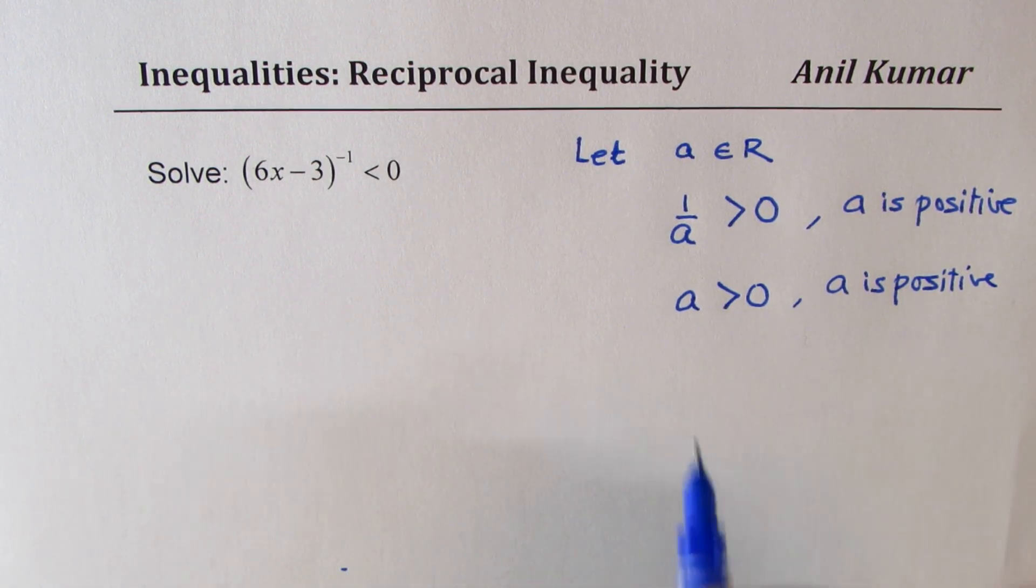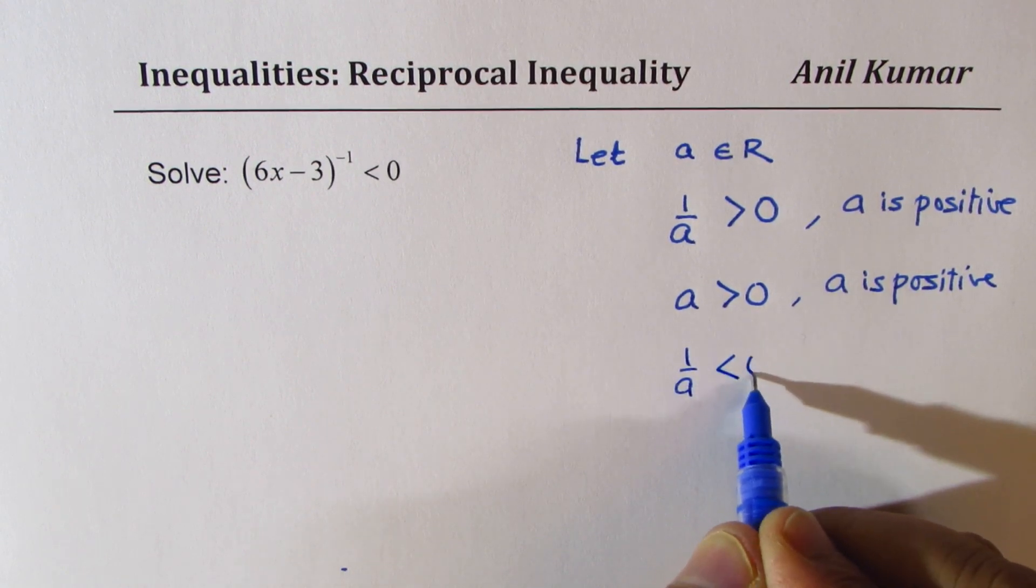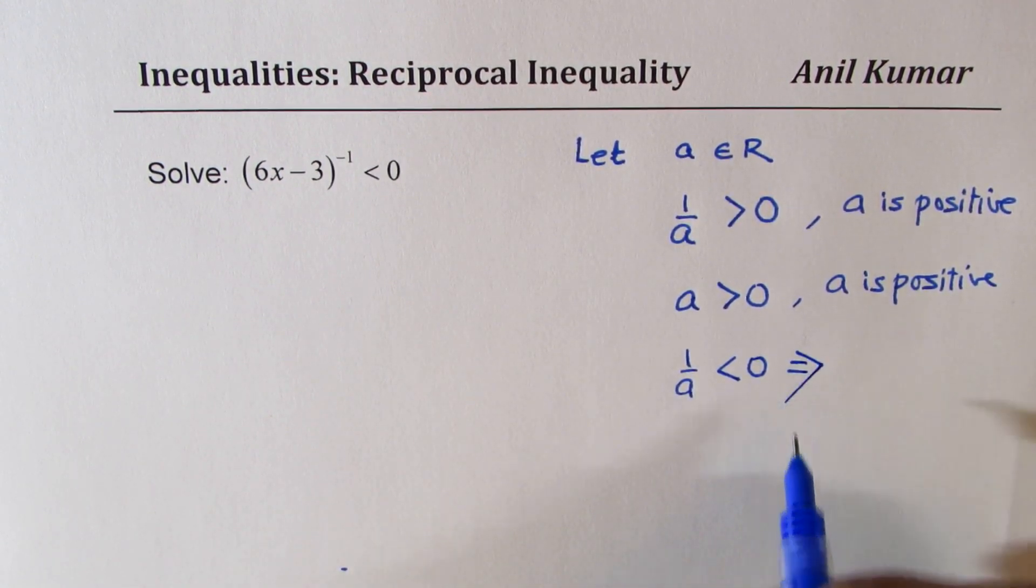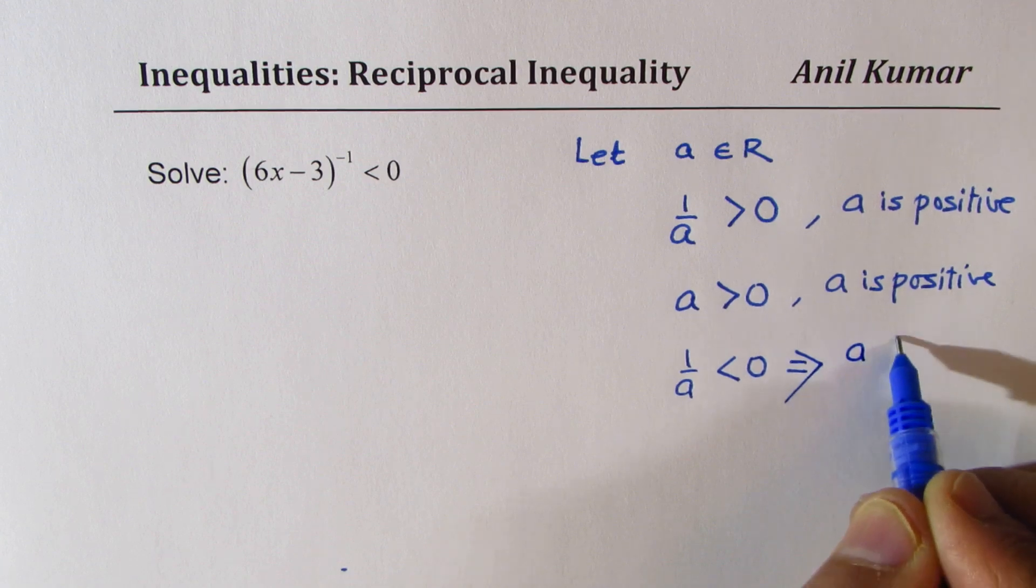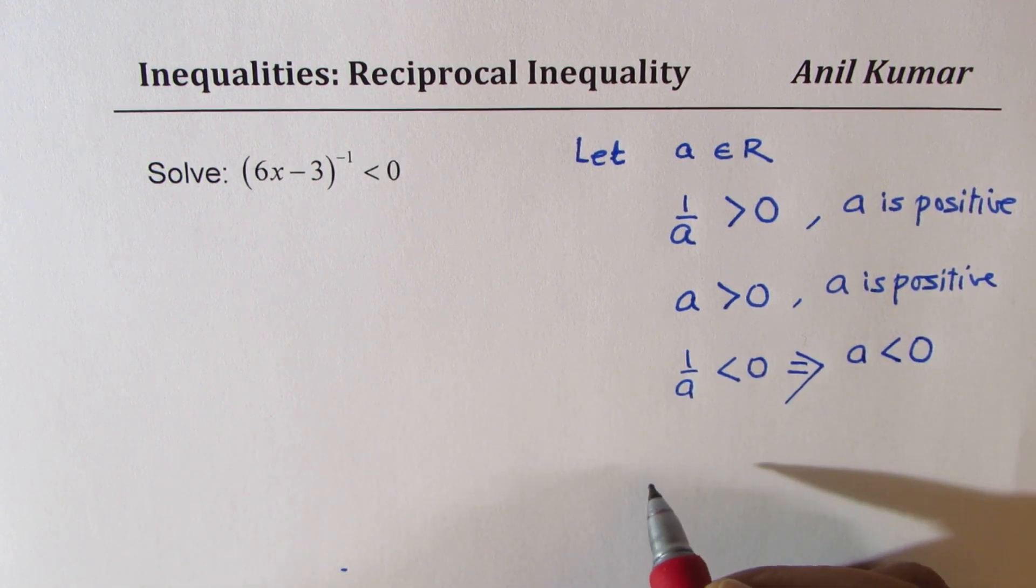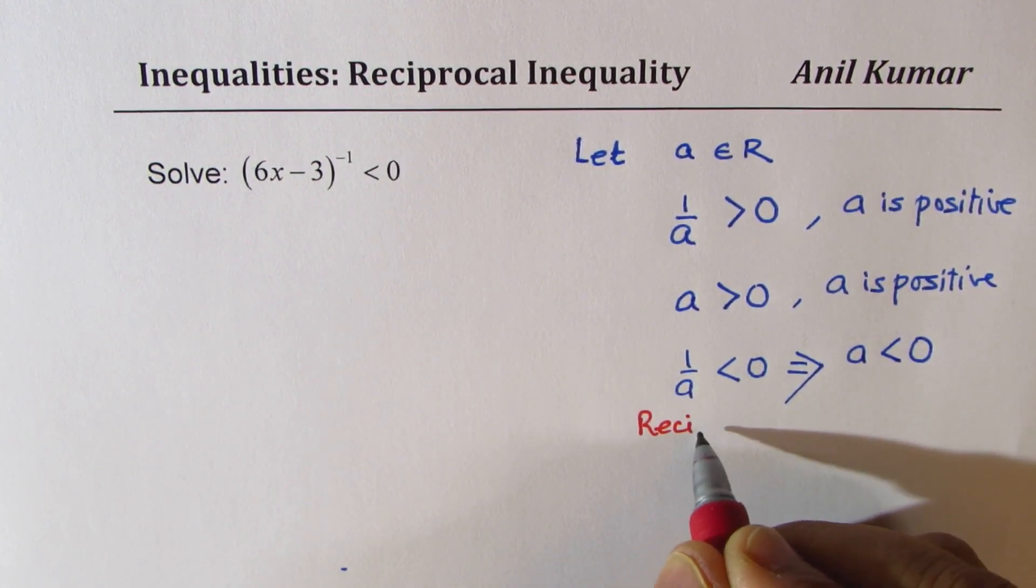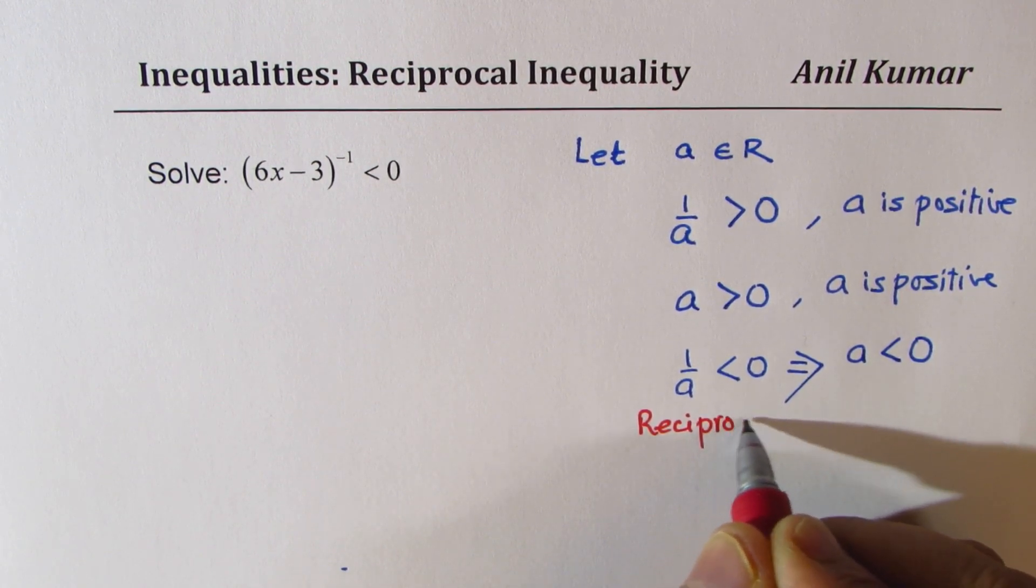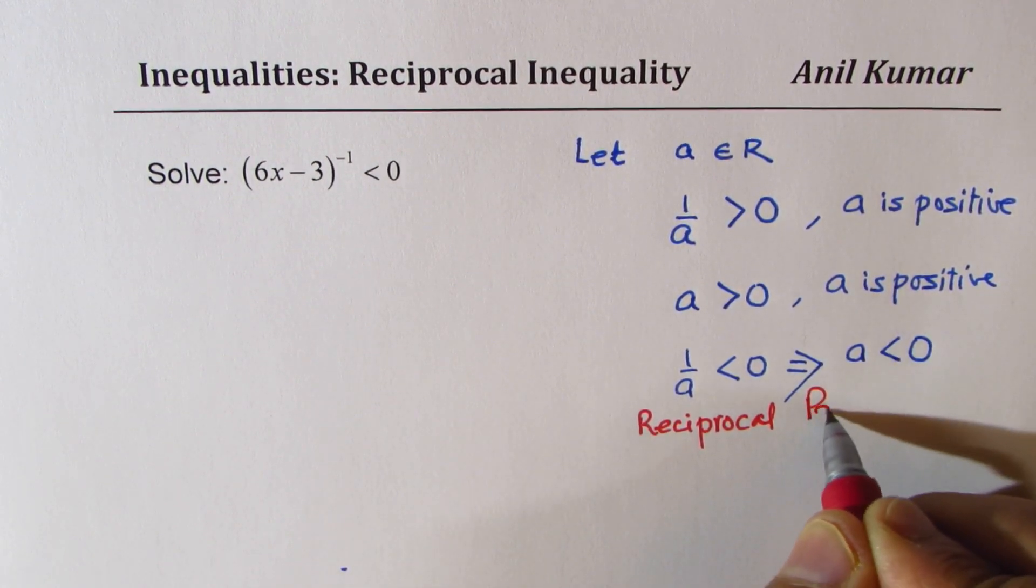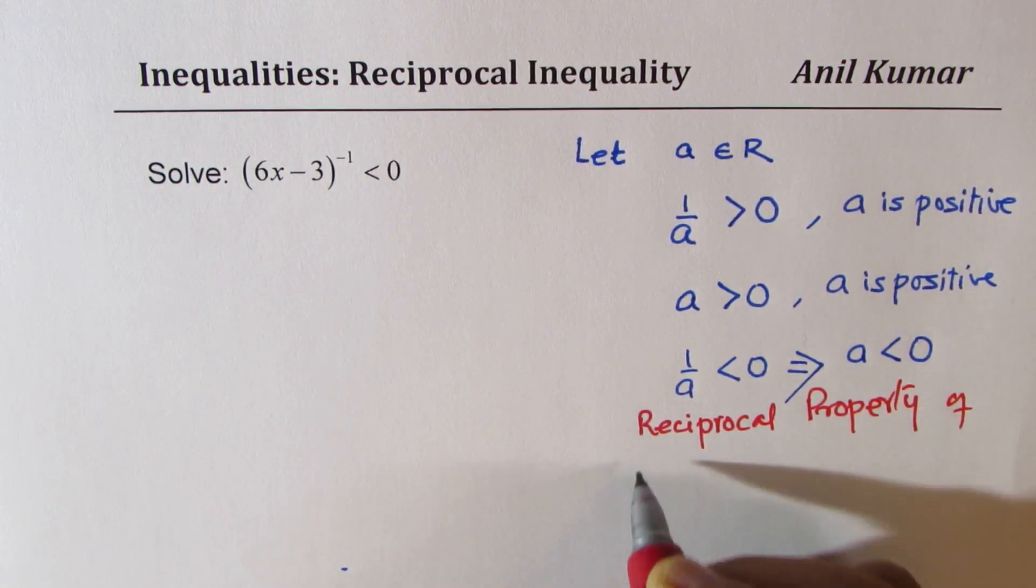If we have 1 over A less than 0, that also implies that A should be less than 0. So this is a very important property and we call it reciprocal property of inequalities.